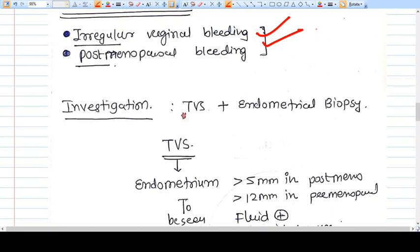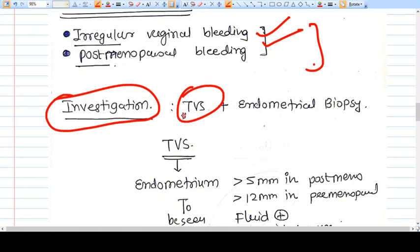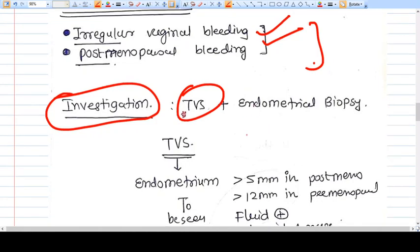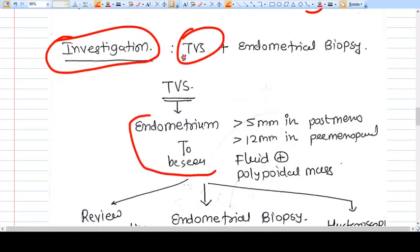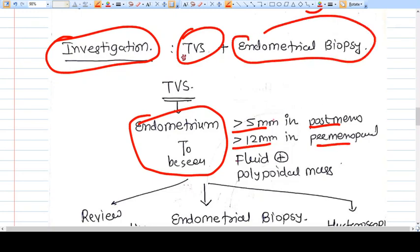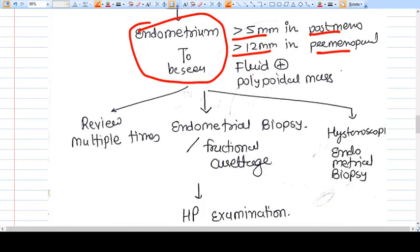Once the patient comes to you, the first investigation you do for diagnosis is TVS, transvaginal ultrasonography. In transvaginal ultrasonography you will find the endometrium is hyperplastic or looks different. If it looks more than 5mm in postmenopausal or more than 12mm in premenopausal, then you will go for endometrial biopsy.